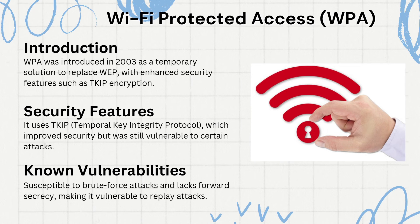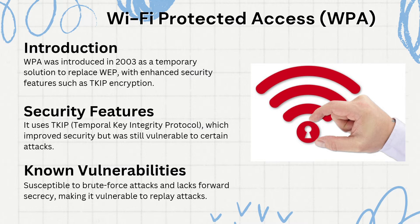Let's start at the beginning. WPA stands for Wi-Fi Protected Access. It was developed quickly to replace the flawed WEP as the security protocol for wireless networks. WPA improved upon WEP by implementing TKIP, Temporal Key Integrity Protocol. TKIP was a significant upgrade because it used a more complex encryption key and changed the key for each packet, which helped prevent certain types of attacks that compromised WEP.